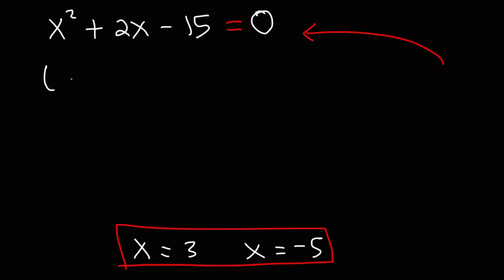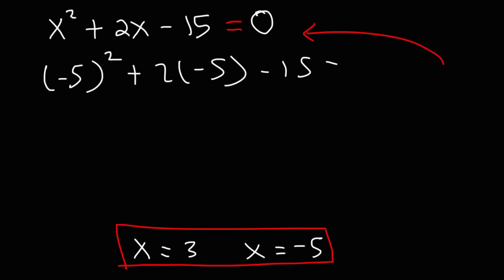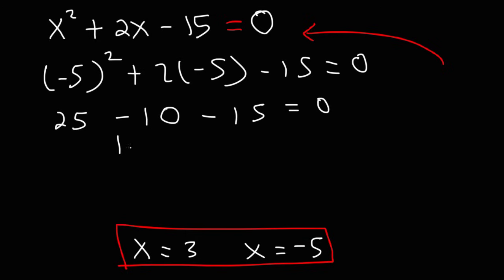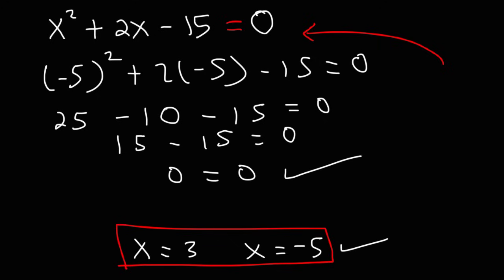Let's check the other answer. Replace x with negative 5. Negative 5 squared, which is negative 5 times negative 5, is equal to positive 25. 2 times negative 5 is negative 10. And 25 minus 10 is 15. We're going to get 0 is equal to 0, so the second answer is indeed correct.